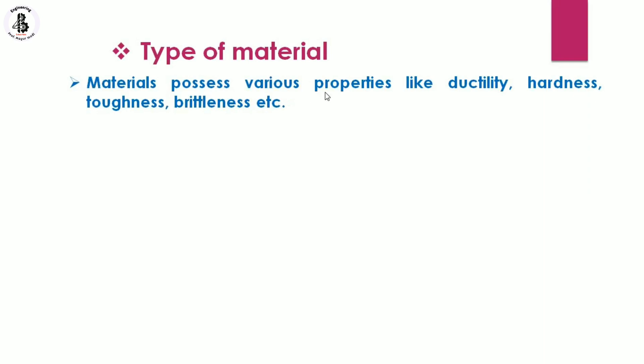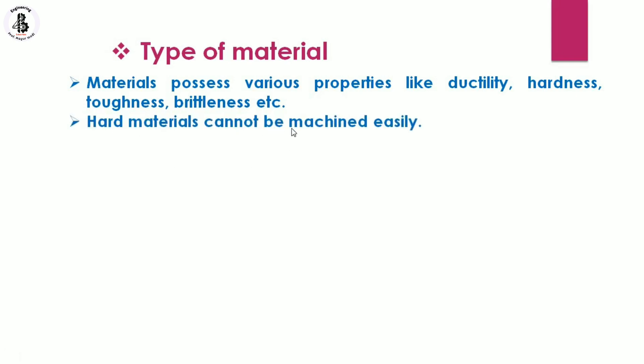The third factor is type of materials. Materials possess various properties like ductility, hardness, toughness, brittleness, etc. Depending on which material is selected for the workpiece, it is converted into the desired shape and size accordingly. The selection of materials determines the selection of the production process. Hard materials cannot be machined easily, so you should go for a powder metallurgy process or a casting process to manufacture such components.